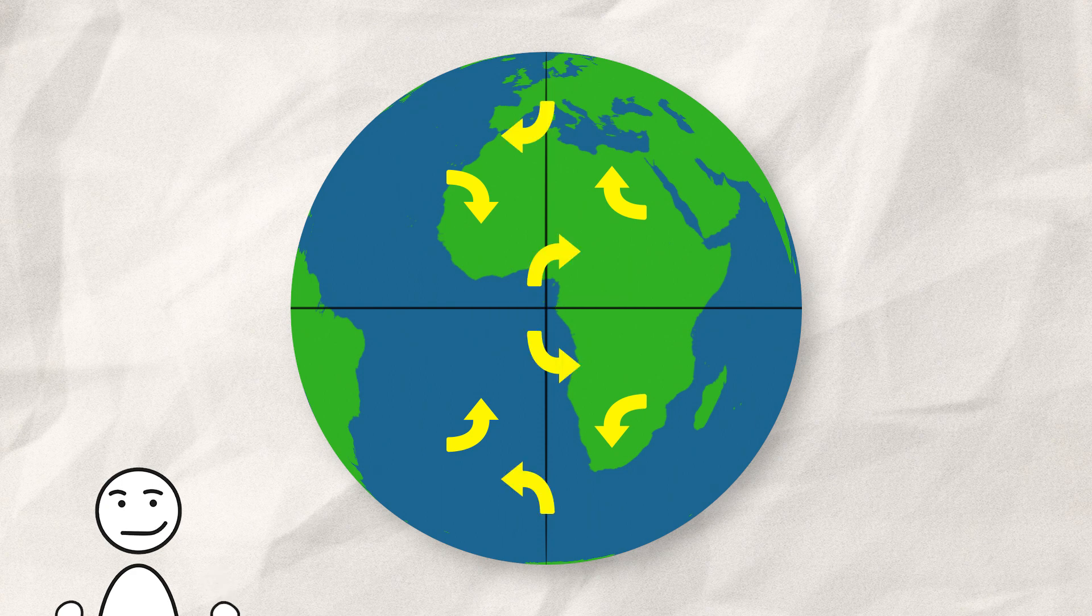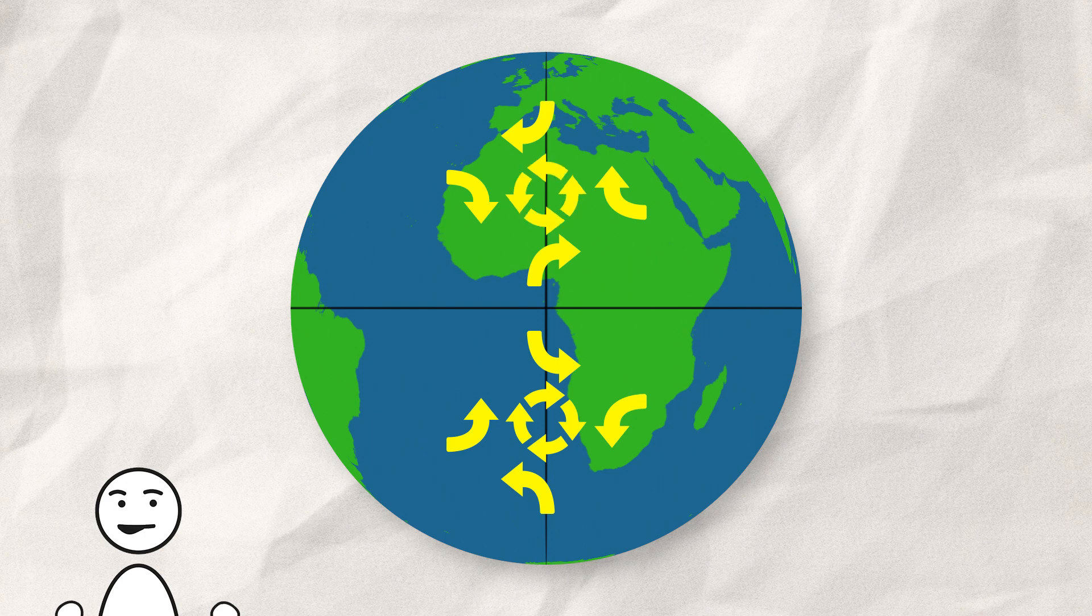And there we have it again. In the southern hemisphere, we deflect to the left, resulting in a clockwise rotation, but the northern hemisphere deflects to the right, of course, with a counterclockwise rotation.